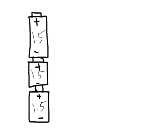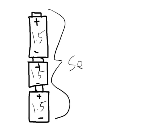Many devices use multiple batteries. If you have a device that calls for three 1.5-volt batteries connected in series, we can think of this as three charge escalators, each one lifting charges to a higher potential. Because each battery raises the potential by 1.5 volts, the total potential difference of all three batteries in series is 4.5 volts.